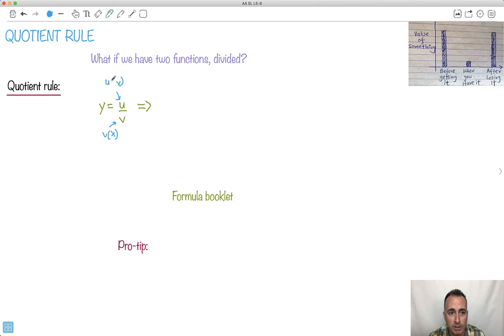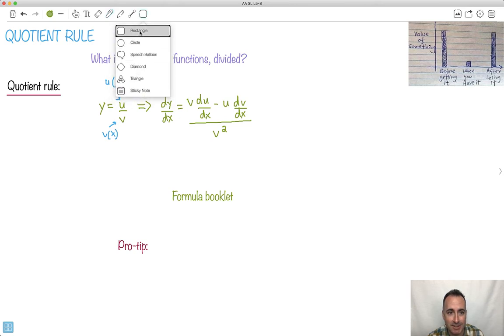And luckily, you get this on your formula booklet, so you don't have to memorize it. It goes like this: dy/dx, which is the derivative, is going to equal v du/dx minus u dv/dx, all that over v squared. Okay, so that kind of looks ugly, doesn't it? A lot of students look at this and just want to throw up, fair enough.